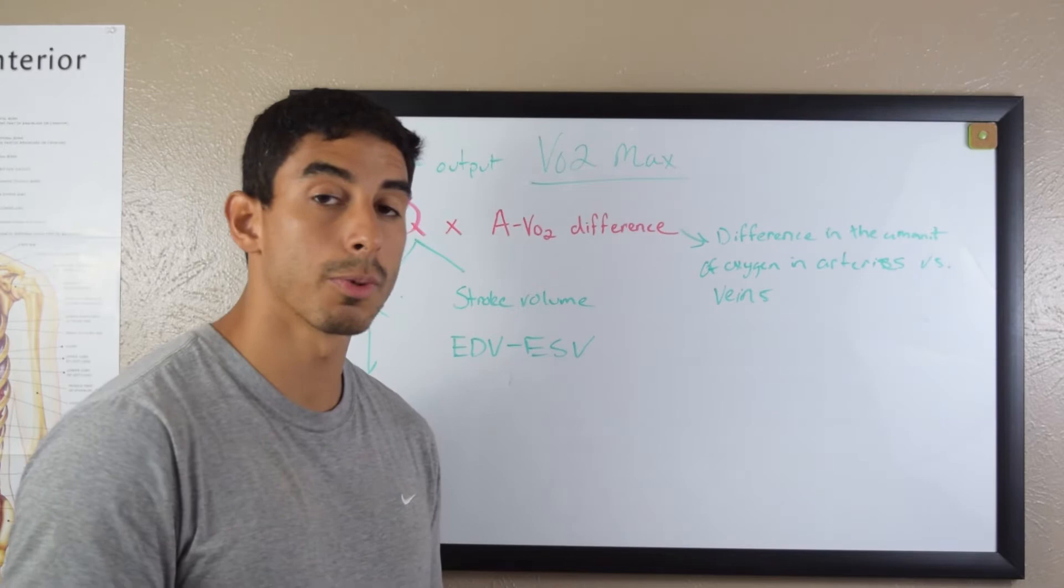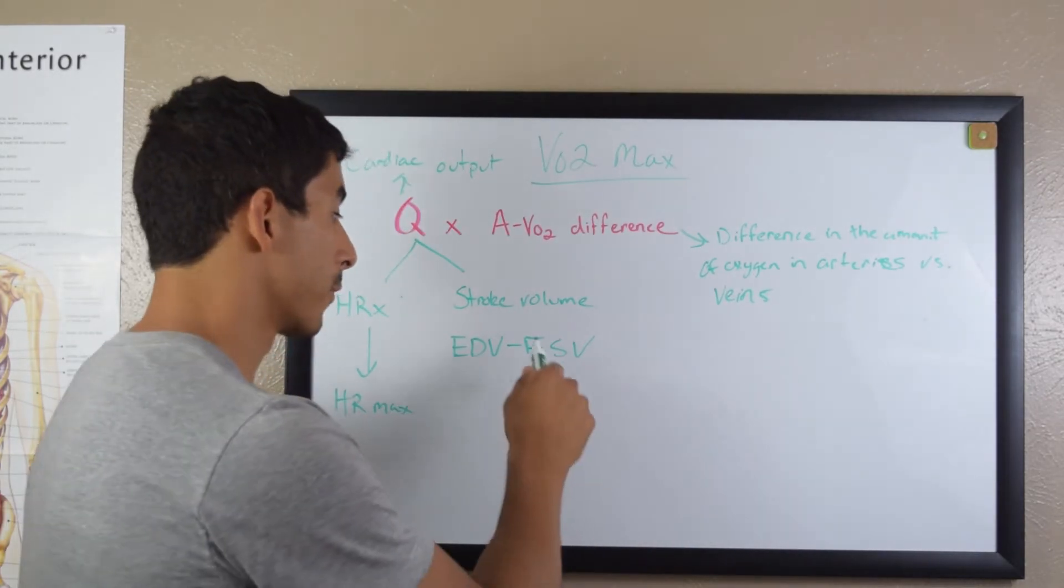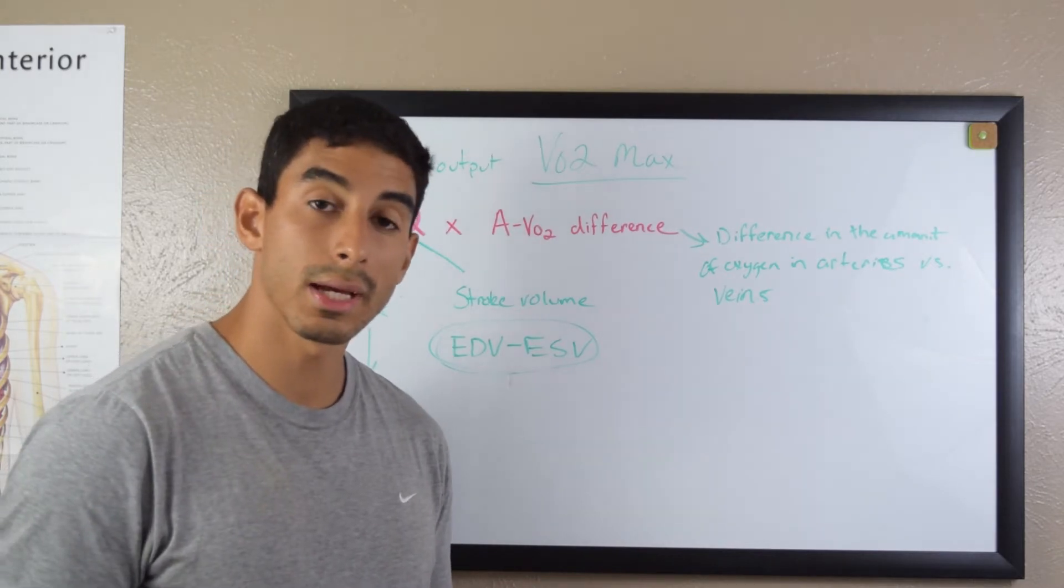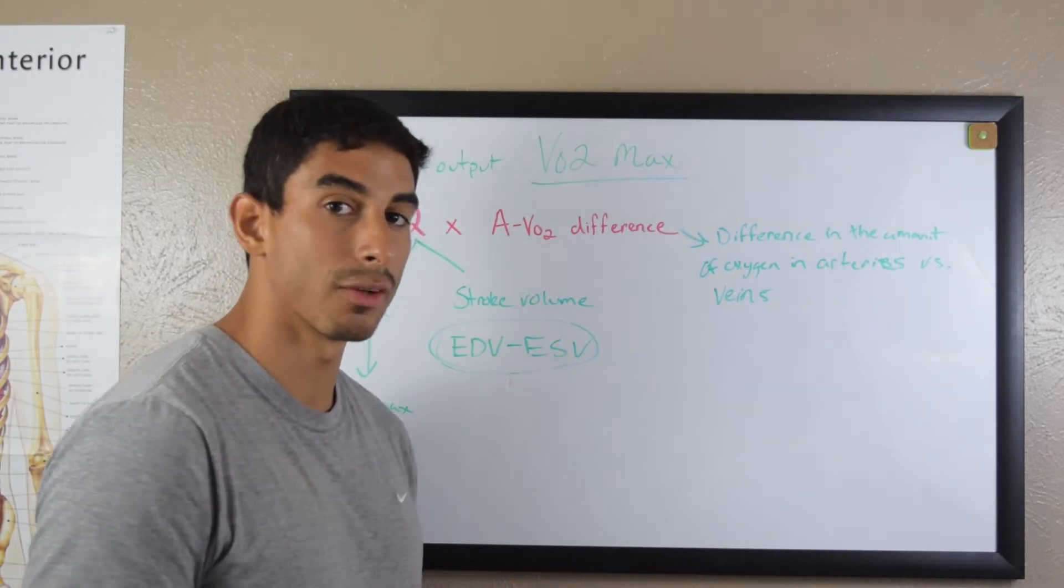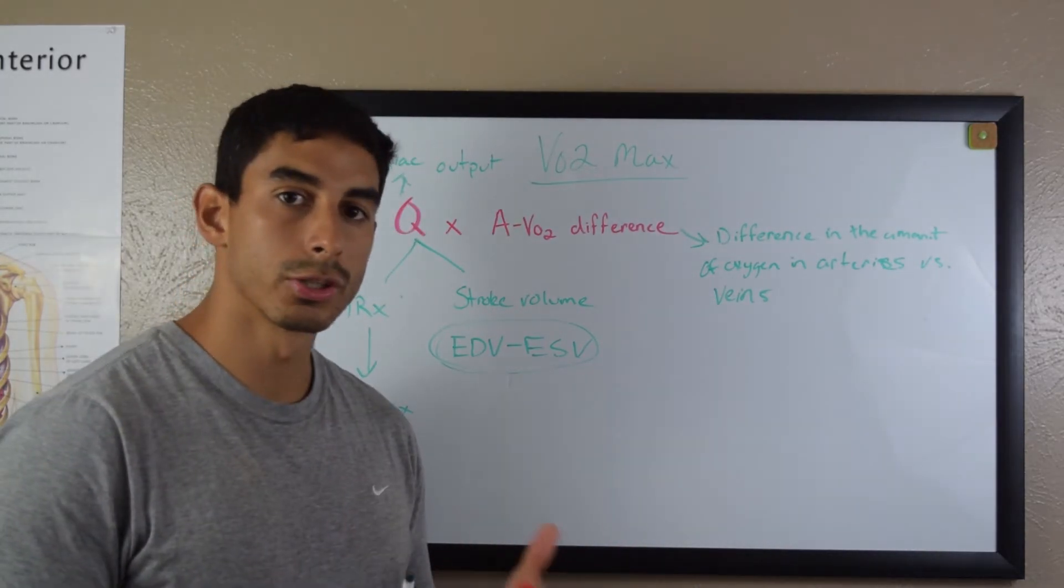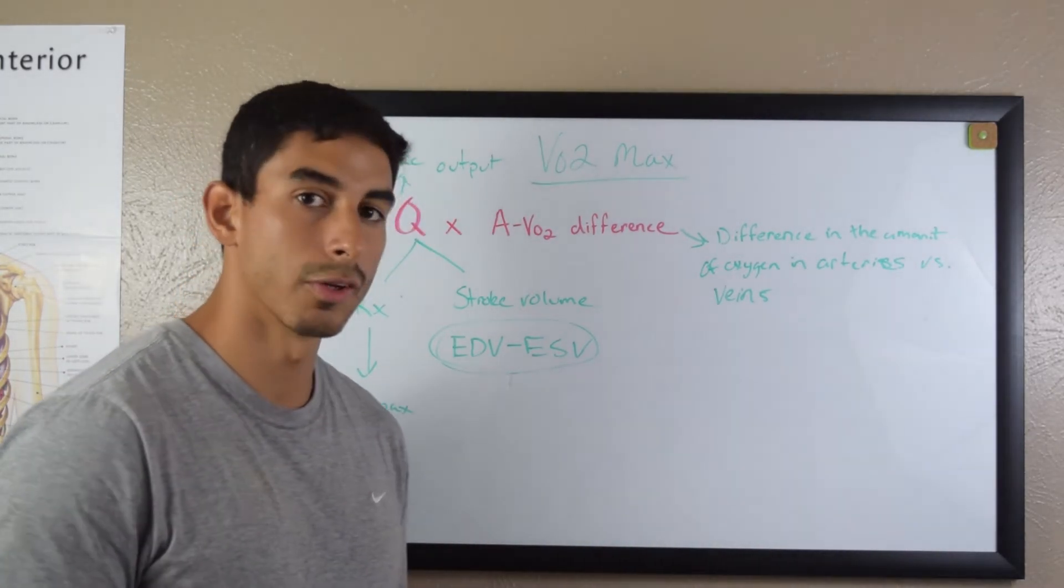So this is just the amount of blood that's pumped by the heart each beat. You may need this on a question or two, just know end diastolic volume minus end systolic volume. And if you understand the cardiac cycle, this should be pretty simple.